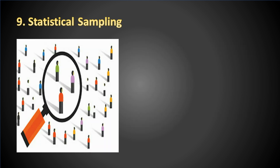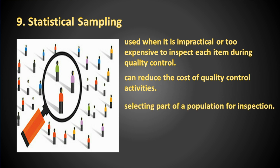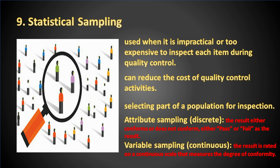Statistical sampling is used when it is impractical or too expensive to inspect each item during quality control. Sampling can reduce the cost of quality control activities. It is defined as selecting part of a population for inspection. Sampling methods include attribute sampling — where the result is discrete, either conforming or not conforming. For example, a pass/fail report of a student: you can only have either pass or fail as the result.